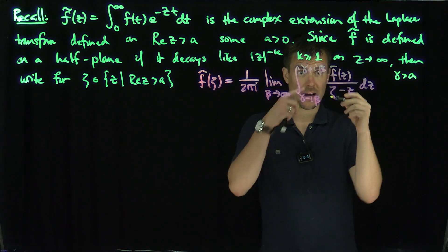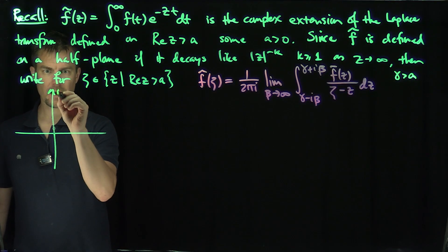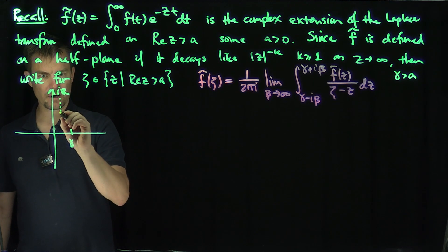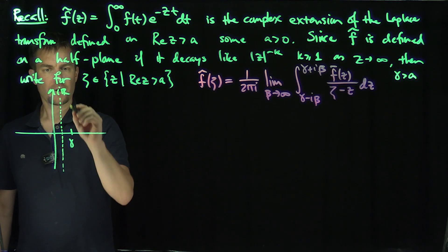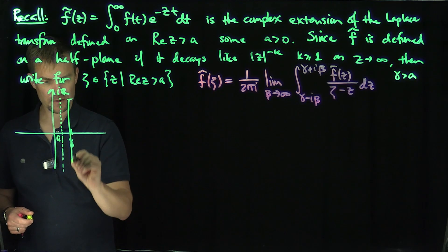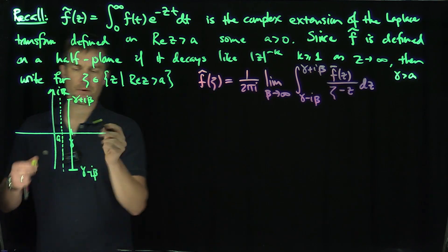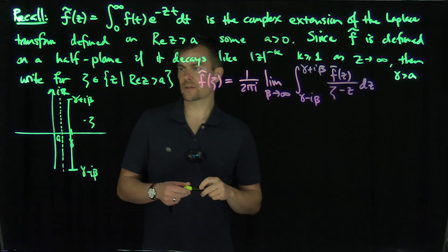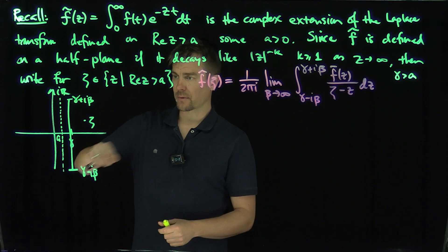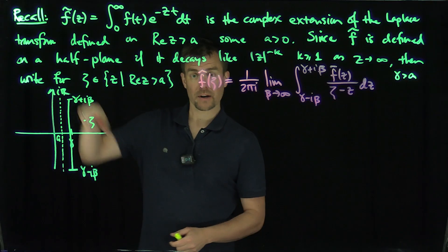So we're representing f-tilde of zeta in the following way. Here's our complex plane with the imaginary axis; here's gamma over here. The function is holomorphic to the right of a. What we're going to do is draw this vertical line at gamma, going from gamma minus i beta to gamma plus i beta. For any zeta I wish in the right half-plane, I can recover its value using this formula. Technically I'd have to draw a semicircle, but that circle contribution cancels by the decay assumption, so I can use the residue theorem — it's just this limit.